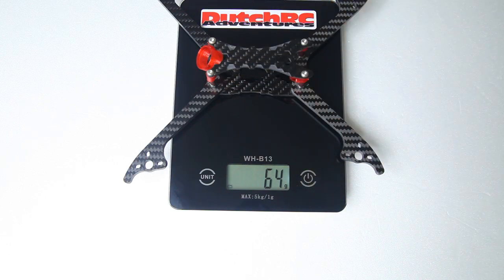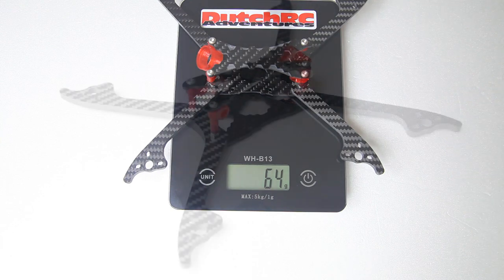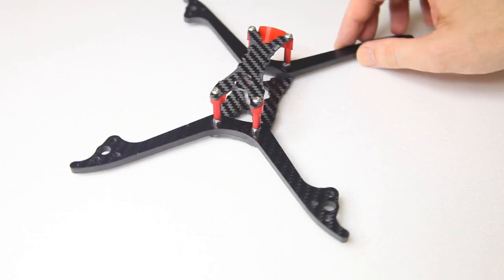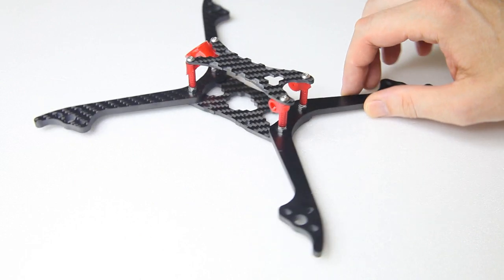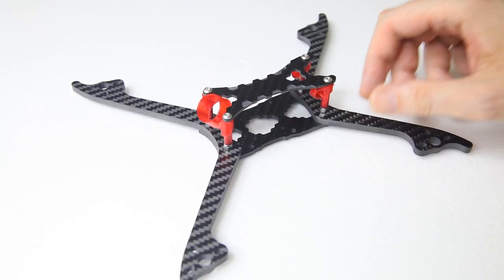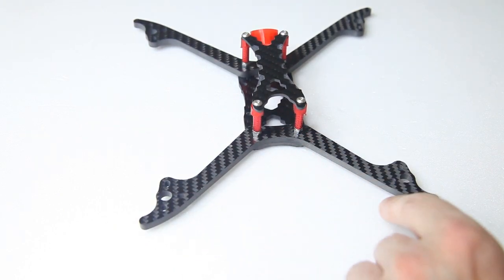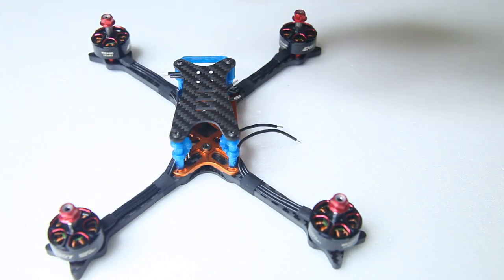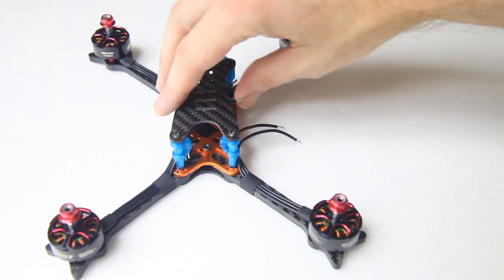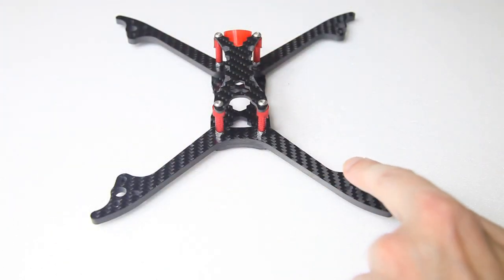This Floss 3.0 frame is 74-75 grams with included TPU antenna mount and camera mounts. 64 grams for this Wasp with antenna mount and camera mounts. That is definitely significantly lighter. They probably weighed the frame without the camera mounts and the antenna mount, I'm not even sure. But that's what the frame weighs.